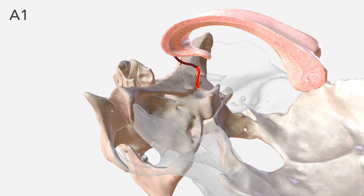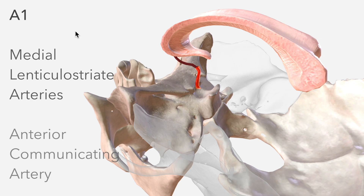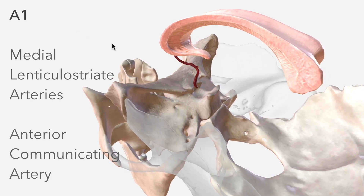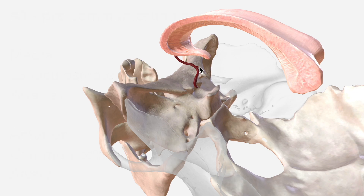Departing from A1 we have the medial lenticulostriate arteries, and the anterior communicating artery is said to depart from A1 as well. A1 is also known as the pre-communicating segment, which is a pretty intuitive name given that it is prior to the anterior communicating artery.